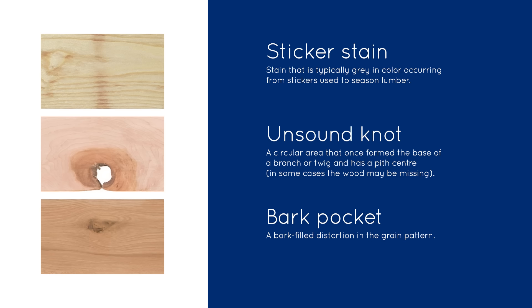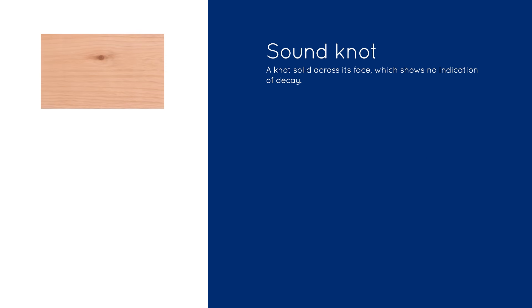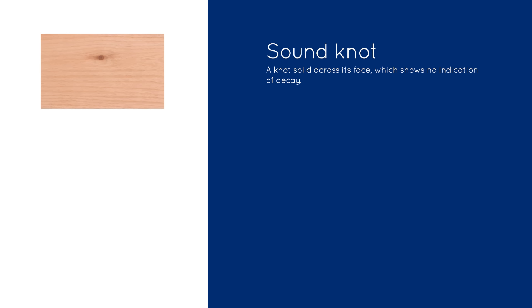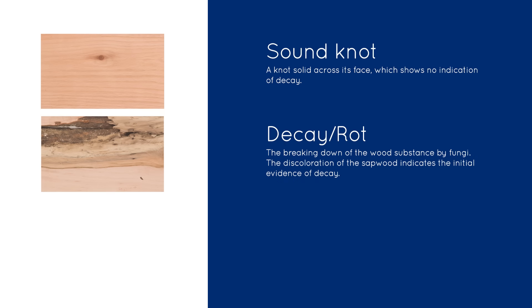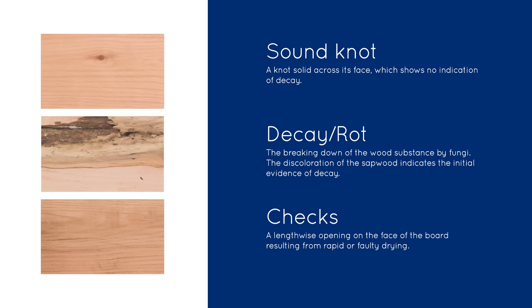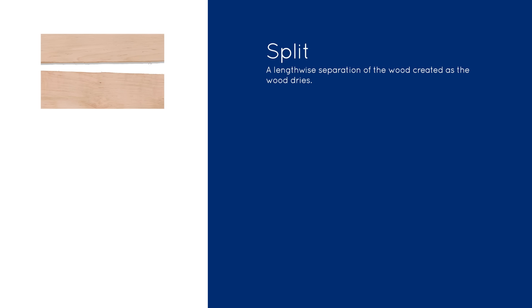These are not allowed in a clear cutting but could be in a sound cutting: a sound knot — simply a knot that's solid — is allowed in a sound cutting but never a clear cutting. Decay or rot could be on the board but is never allowed in a clear or sound cutting; we can measure around it to get our grade. Checks, where the wood separates slightly during drying — if it surfaces off through a planer it's acceptable; if it doesn't, it would be considered sound and not in a clear cutting if too deep. A split itself is not allowed in clear or sound cutting, but with our grading system, we can measure on either side of it and still achieve our grade.